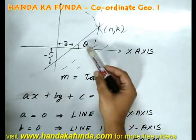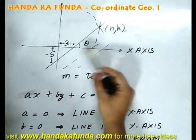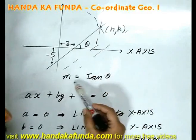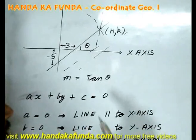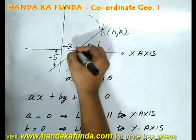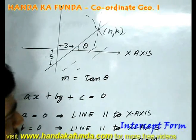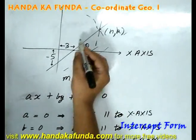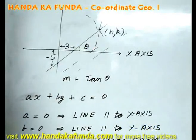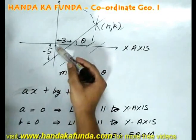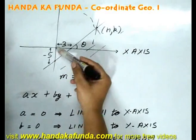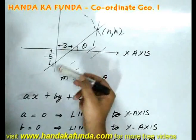Slope of the line is the tan of the angle that the line makes with the x-axis, or m is tan theta. There is something called the intercept also. The point where the line cuts the x-axis is known as the x-intercept. The point where the line cuts the y-axis is known as the y-intercept. So, x-intercept in this case is plus 3, y-intercept is minus 5. It is negative because it is below the origin.